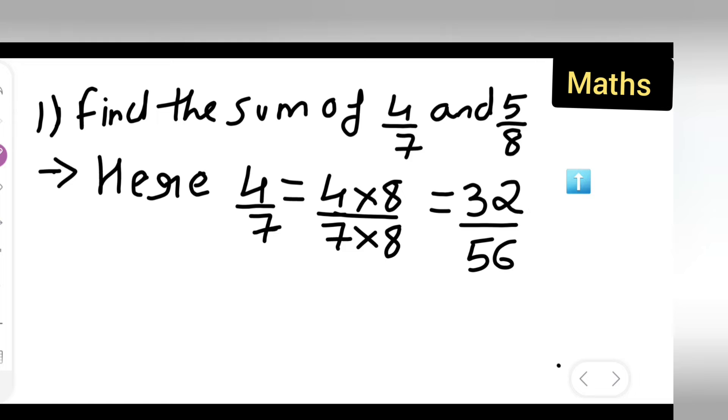And next number is what? And your next number is 5 upon 8. 5 upon 8 is equal to 5 upon 8, multiply it with 7.